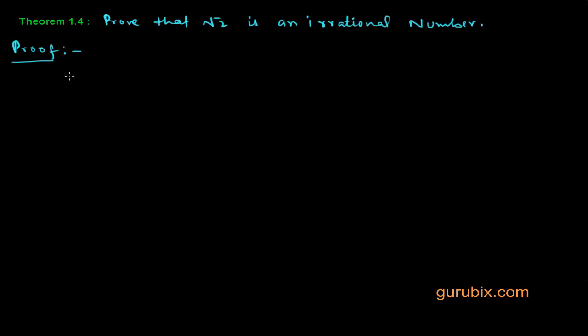Do you remember irrational numbers? The numbers which are surds, and you see the decimal expressions which are not repeating and not terminating. Those numbers are called irrational numbers.